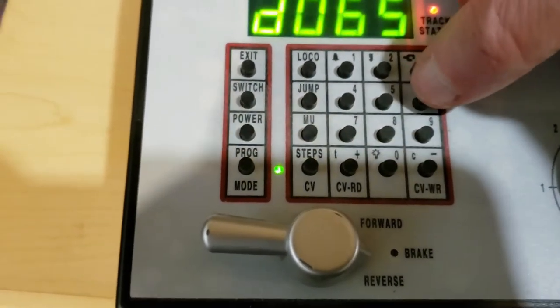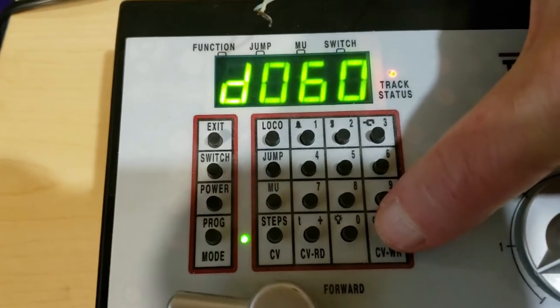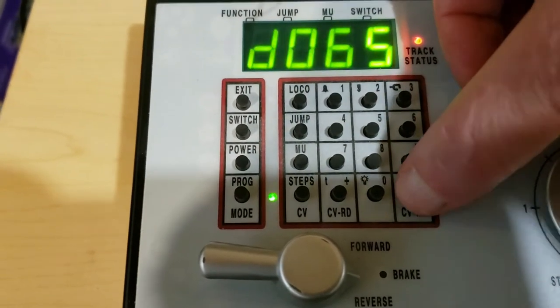So if I want to change it, I just hit 60 as I would do here, and then CVWR, now it's set to 60, but I don't want that. I had it at 65, so I'll just set it back to 65.